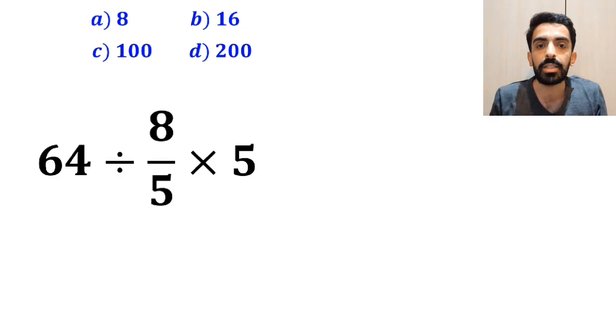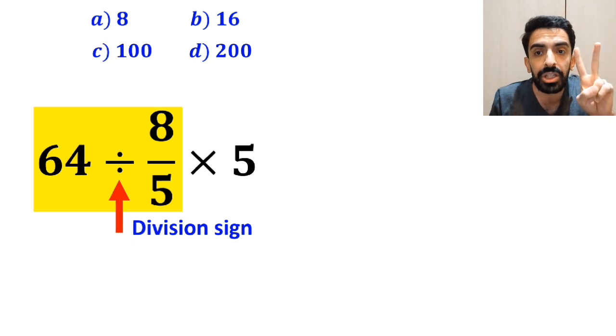So, we'll start with the expression 64 divided by 8 over 5. Okay, whenever we see a division sign between two terms, the best thing to do is to apply the KCF rule. In this rule, K stands for keep the first number as it is.